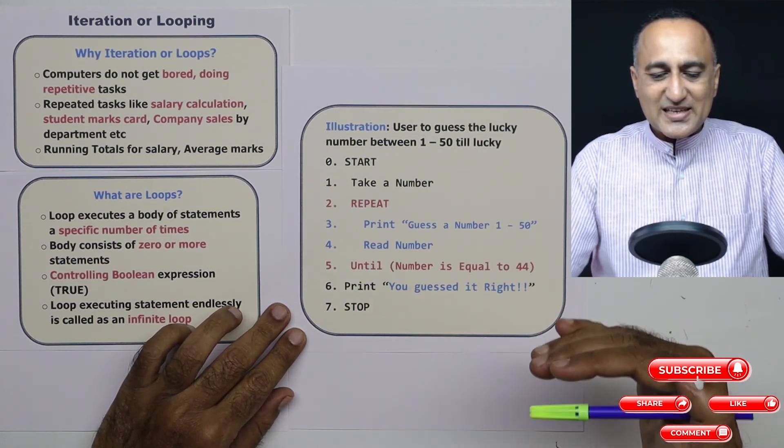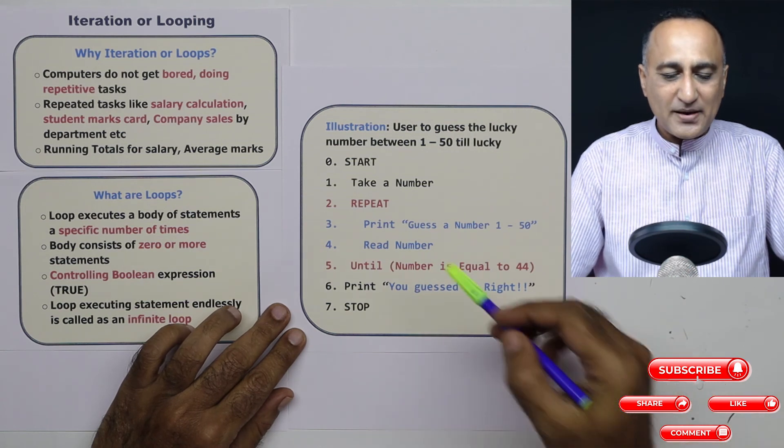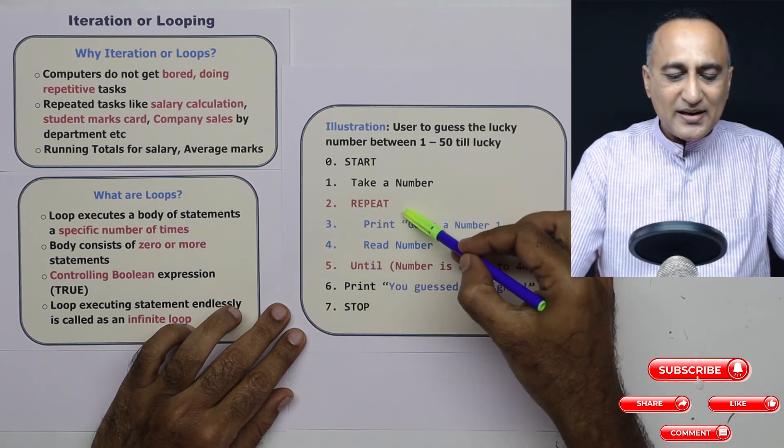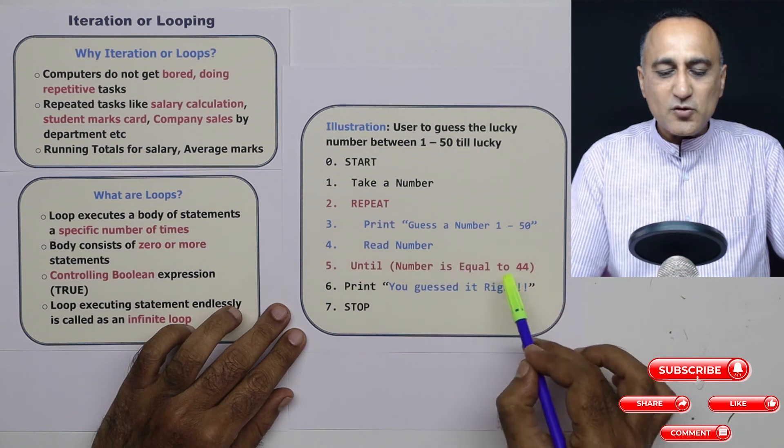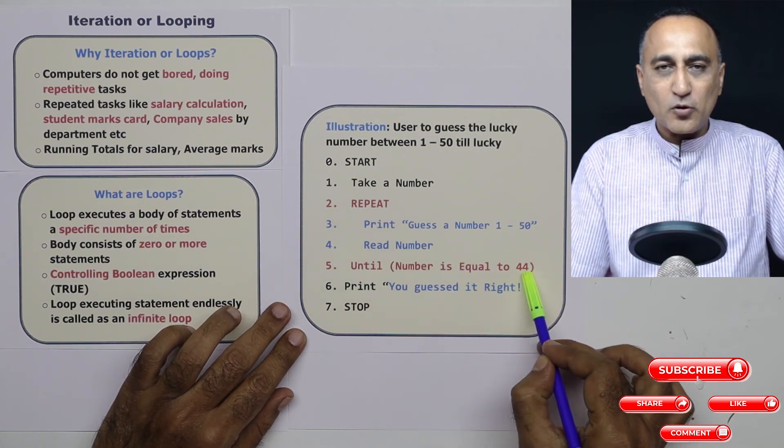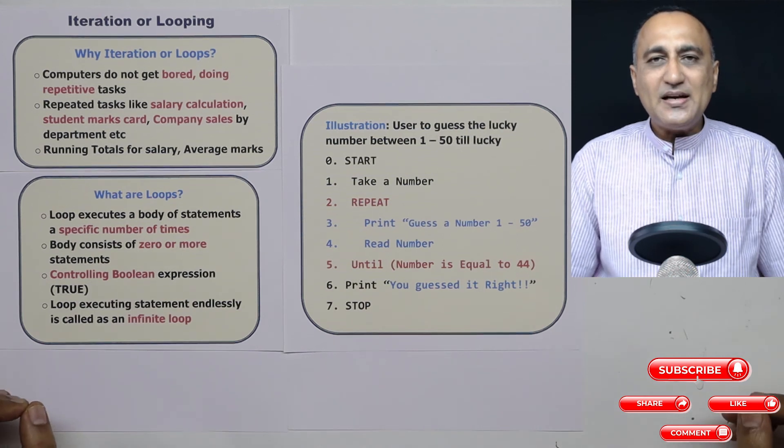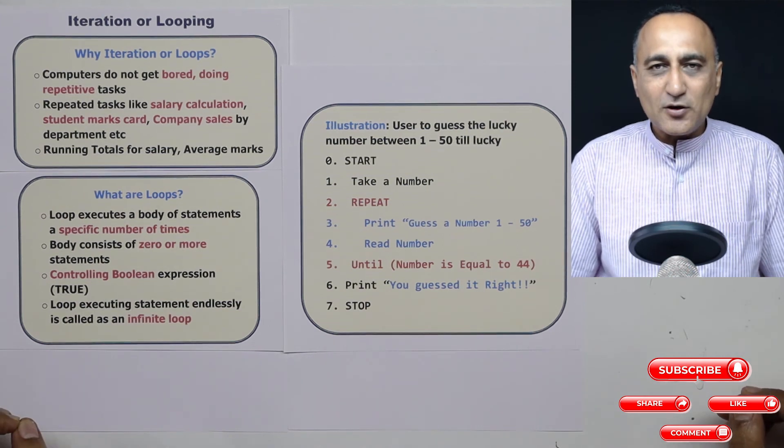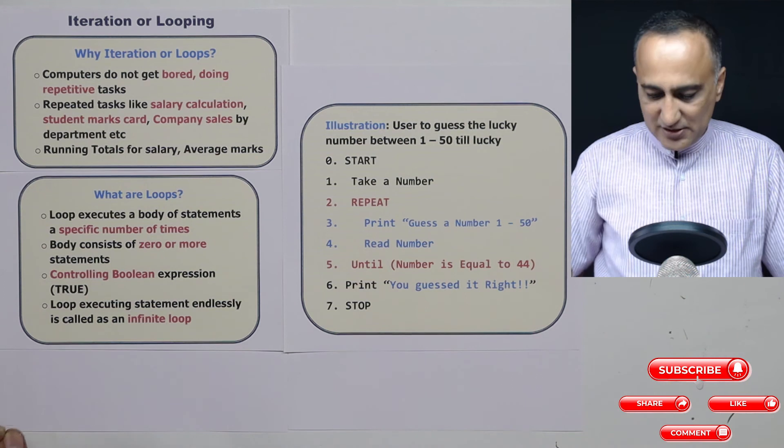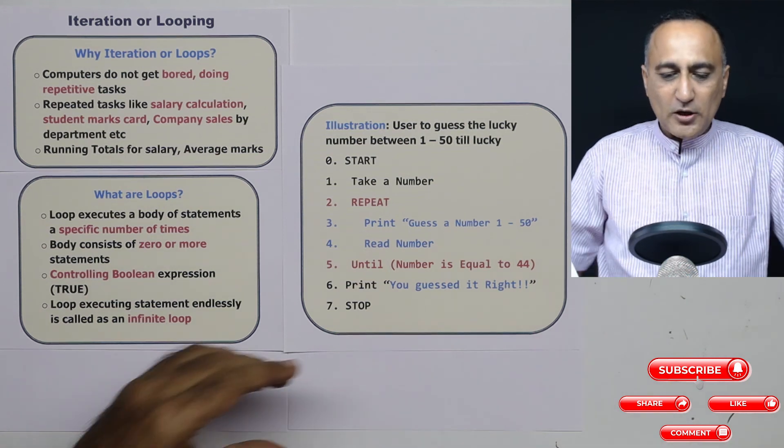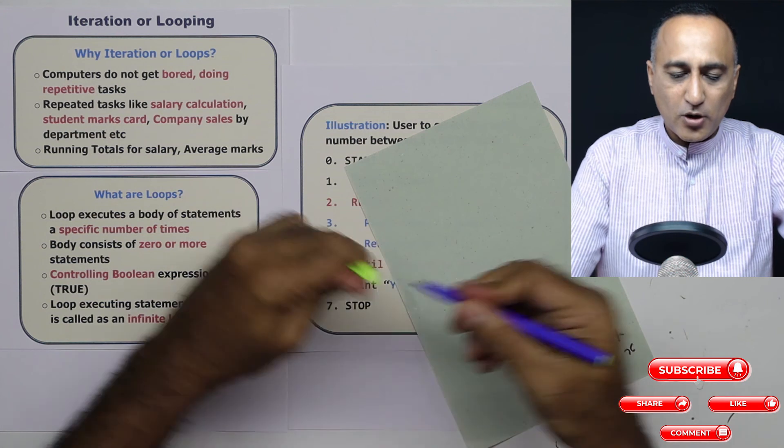This is an example of a looping statement. Anything between repeat and until gets executed till the user enters 44. This is also known as iteration. Repeatedly executing a set of statements in a block is known as iteration or looping. Let me tell you what I mean by a block.